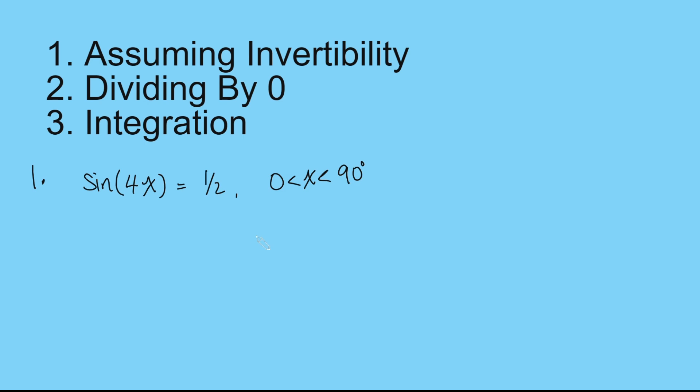Well, what lots of students do, and this is what the mistake is, they'll just go, ah, just inverse sine both sides, and they'll get that 4x is inverse sine of a half. And either they know what that is, or they'll type that into their calculator, and that'll be 30 degrees. And then they'll divide both sides by 4 and go, yep, x is 7.5 degrees. That's between zero and 90. Job done.